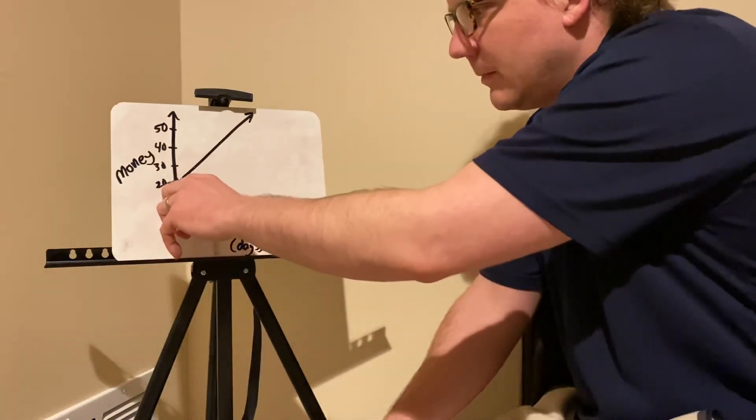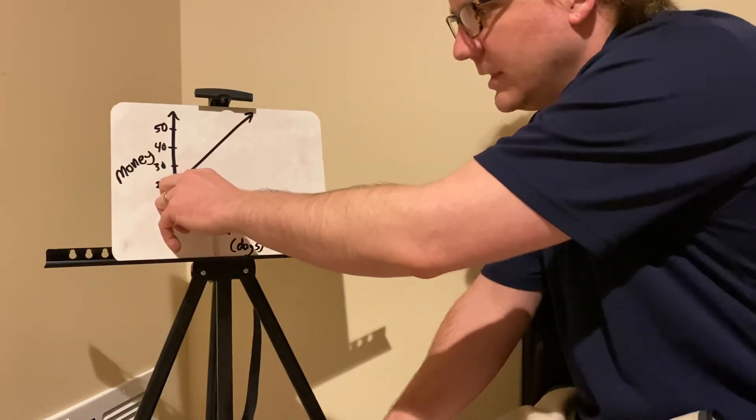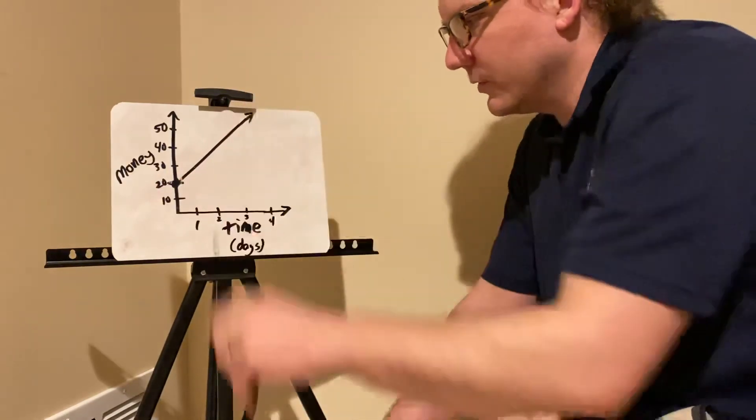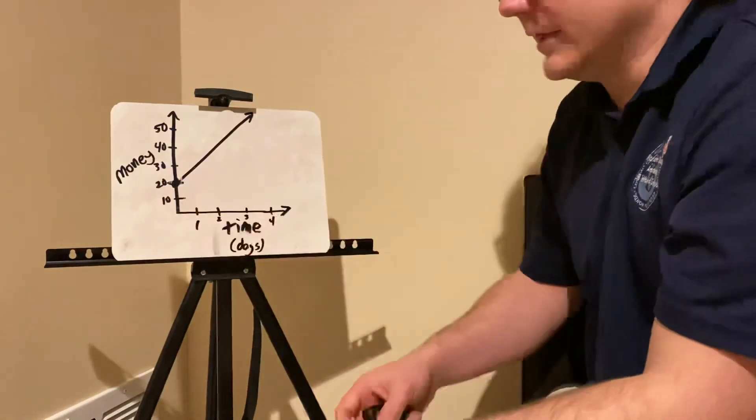and my y-intercept is here at 20, and then my amount of money goes up over the course of days, then what does the y-intercept mean here?